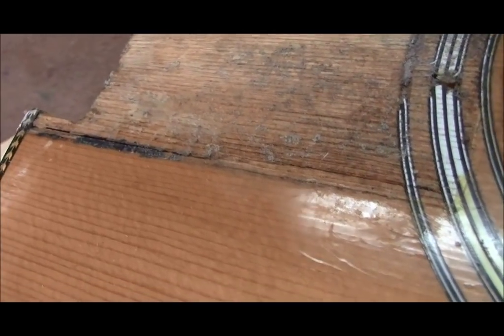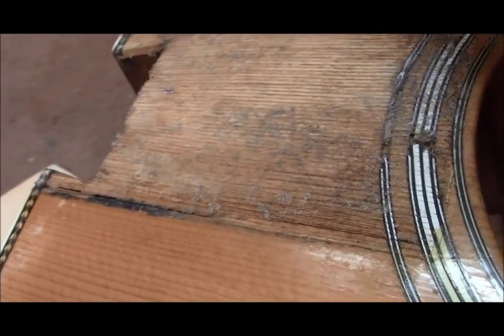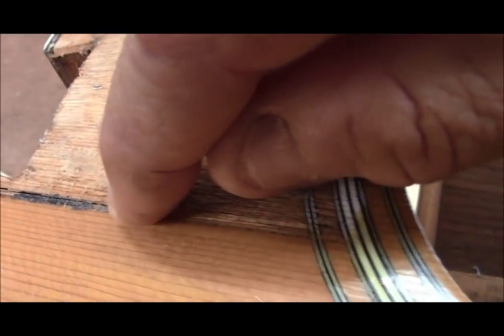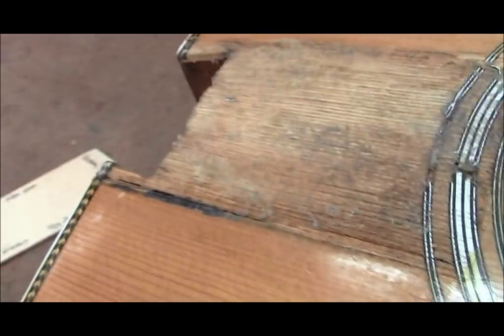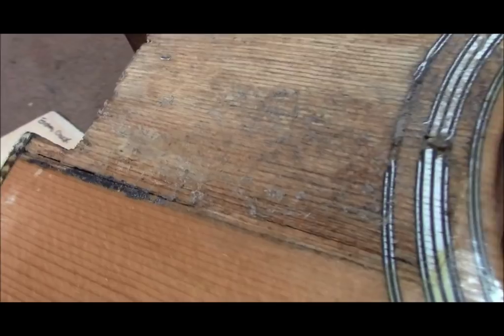This is what the popsicle brace is supposed to prevent and in this case it may have helped because the crack only runs about right here, but we need to fix this. We can't just leave it alone because that's gonna cause some issues.